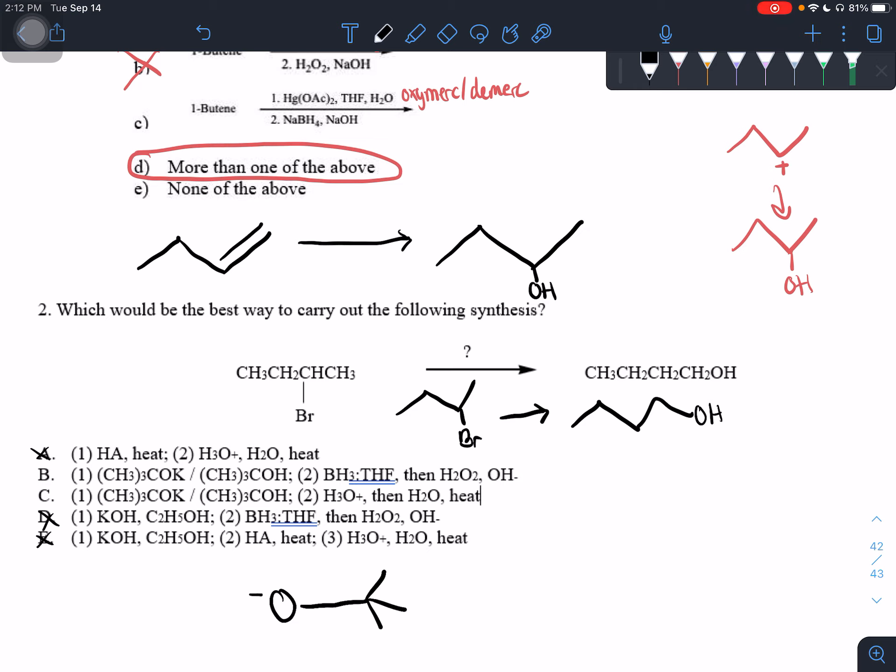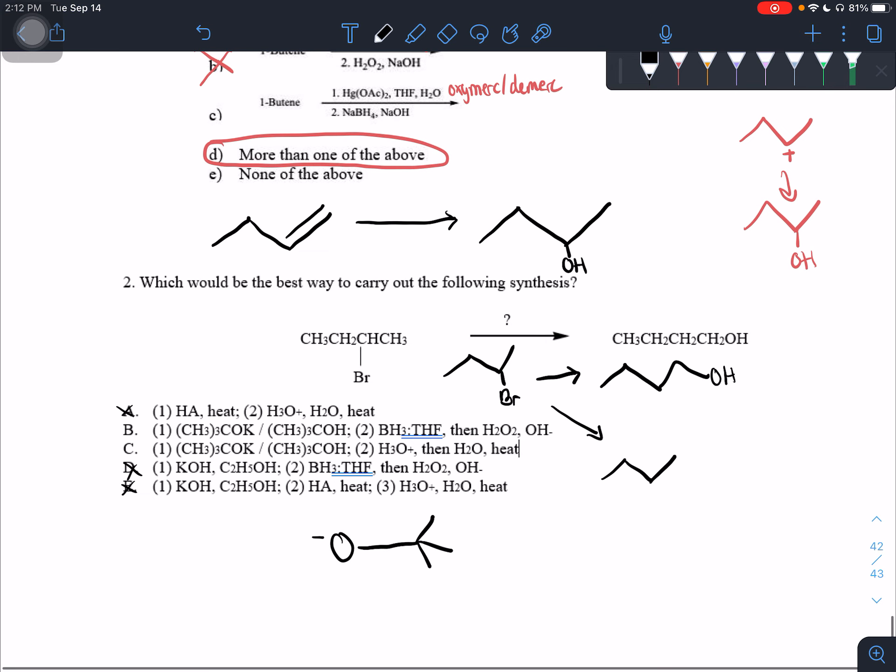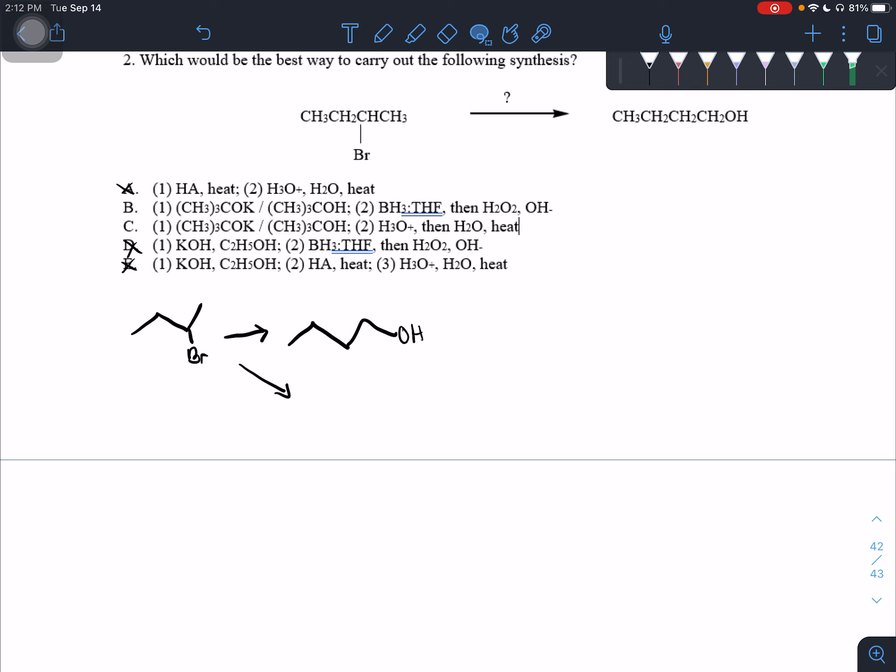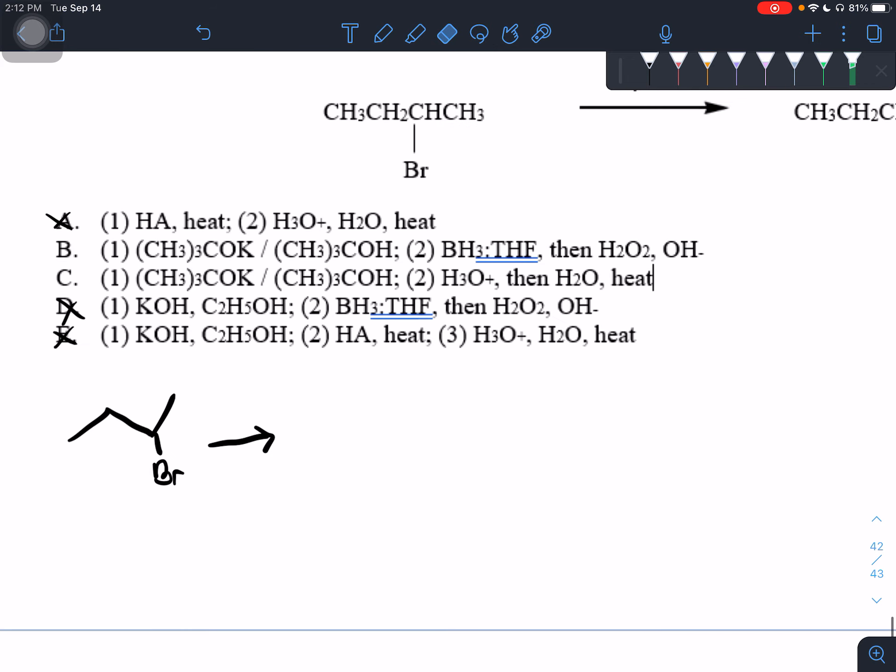So our tert-butoxide is going to come in and help us form. Let me just draw the reaction at the bottom. I don't know why I'm going through all this. Let me move it over here. Okay. All right. I'm going to erase that for a minute. So the first step is to treat this guy with tert-butoxide and all tert-butoxide is going to do is end up doing a attack where we kick off the bromine and we add the double bond here to the less substituted, where we end up with a less substituted double bond.